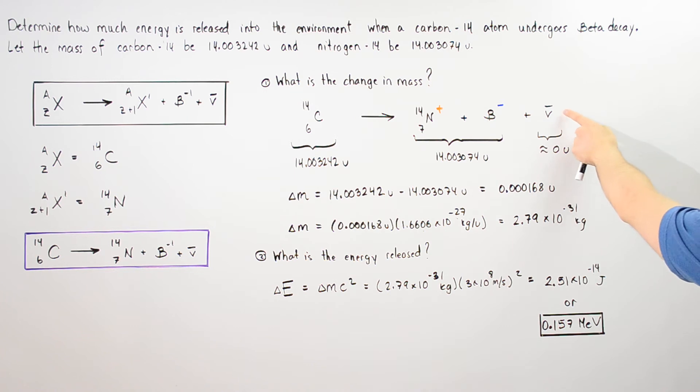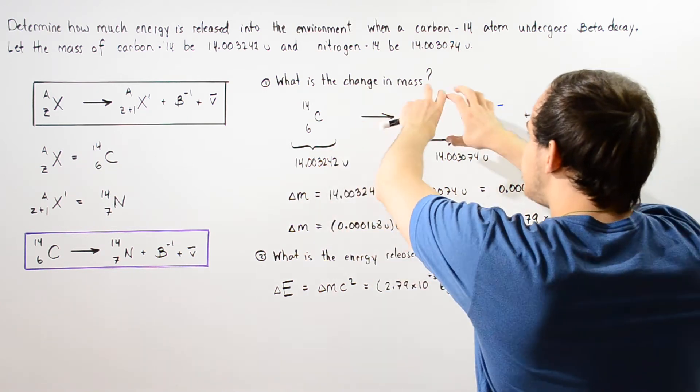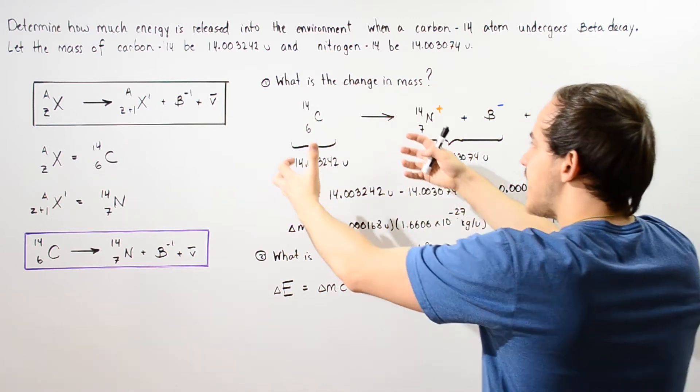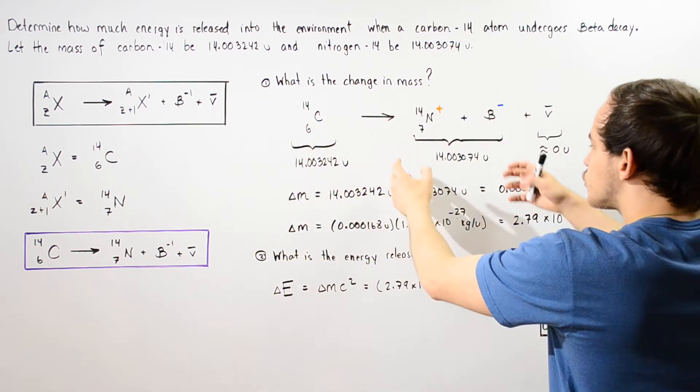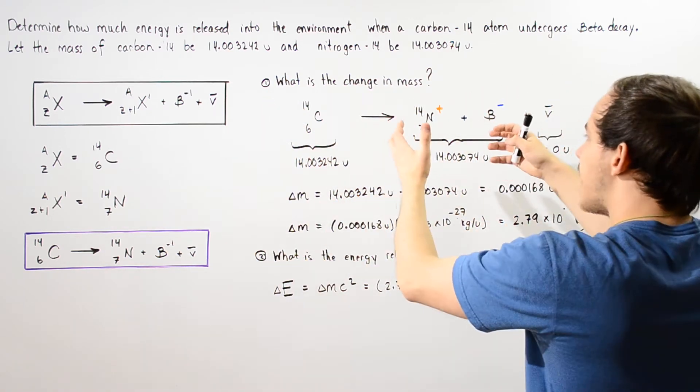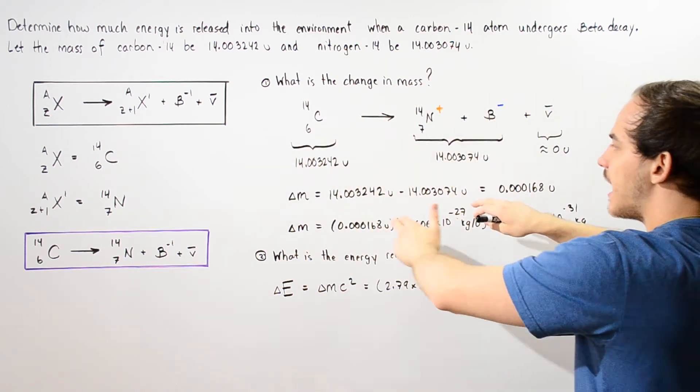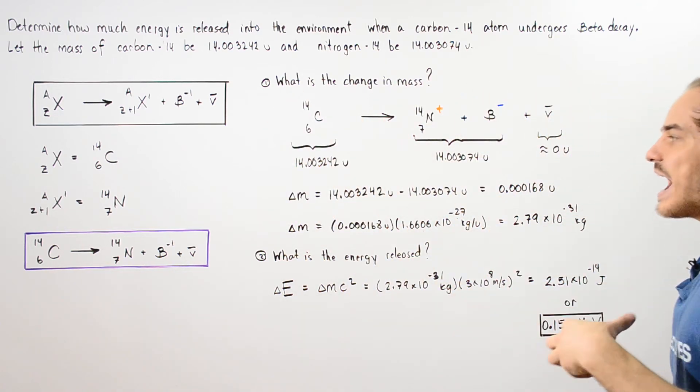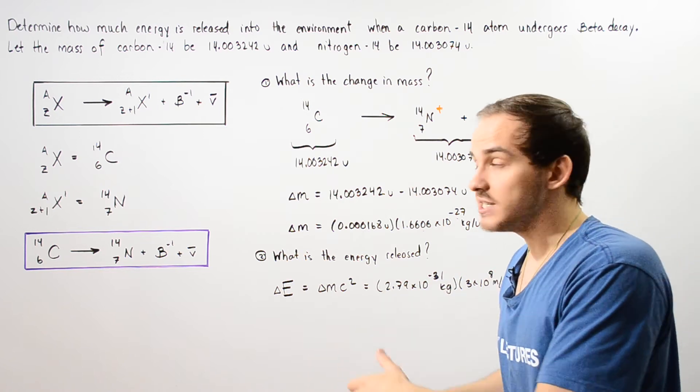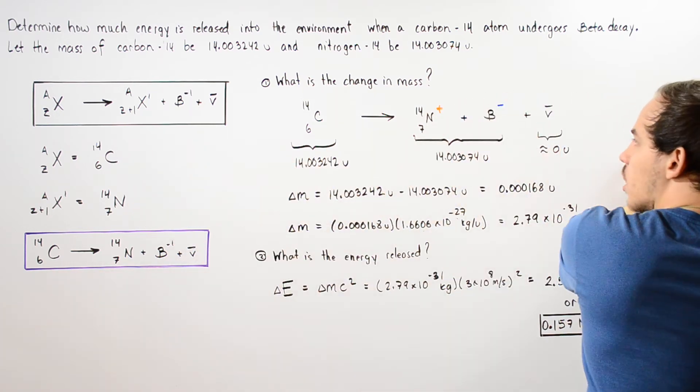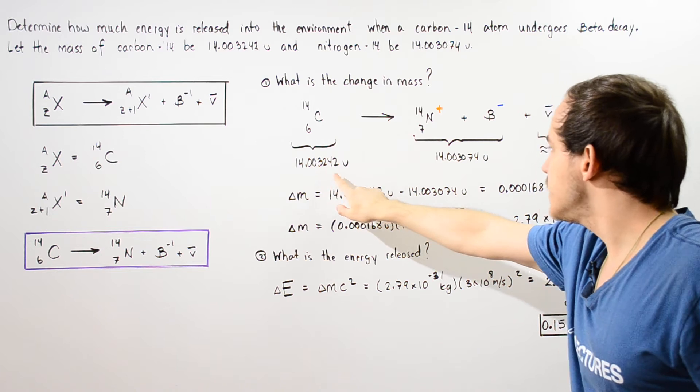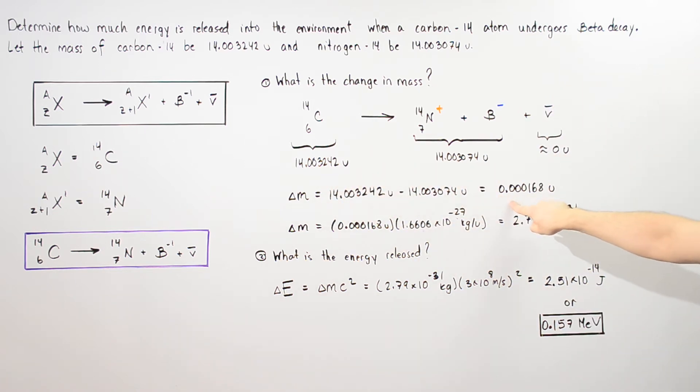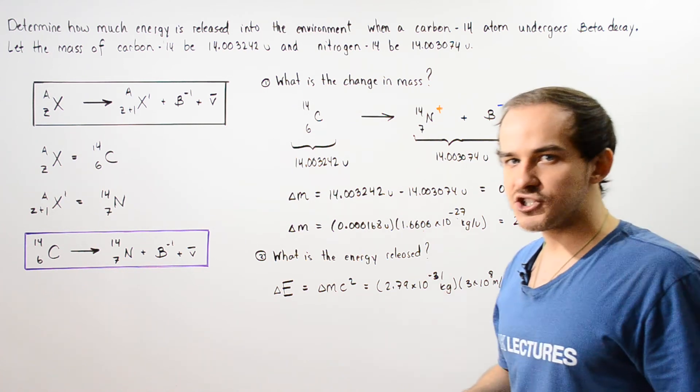We're assuming that the mass of our anti-neutrino is zero and so to find the change in mass we take mass initial and subtract mass final, and that gives us how much mass is decreased when we go along the following direction. This minus this gives us 0.000168 unified atomic mass units.